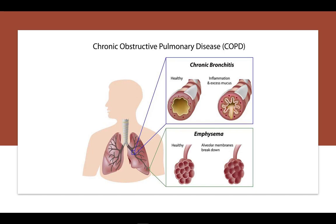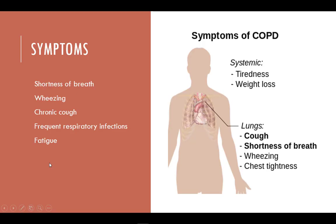In chronic bronchitis, the lining of the airways stays constantly irritated and inflamed, causing the lining to swell, with lots of thick mucus forming in the airways, making it hard to breathe. COPD develops slowly and symptoms often worsen over time, limiting the person's ability to do routine activities. Symptoms include a chronic cough that can be dry or with phlegm, frequent respiratory infections, shortness of breath, wheezing, fatigue, inability to exercise, and chest pressure.